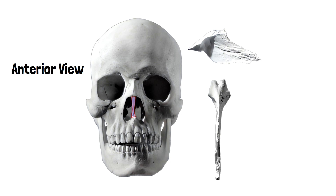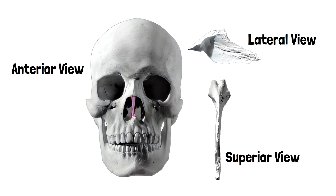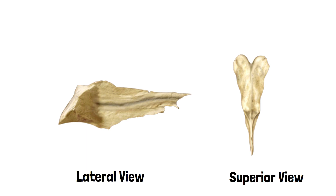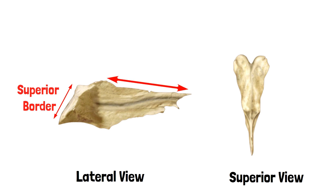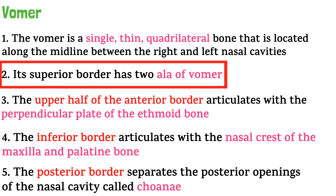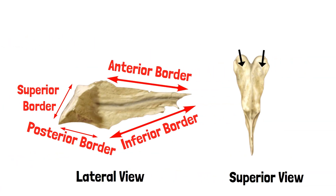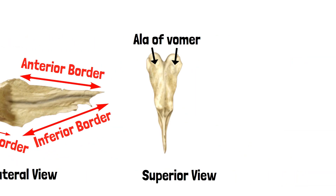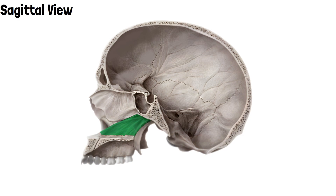This is the anterior view of the skull along with the lateral and superior views of the bone. The vomer is shaded in purple. In the lateral and superior view, we can identify the superior border, anterior border, inferior border, and posterior border. The superior border has two ala of vomer, which are visible here.